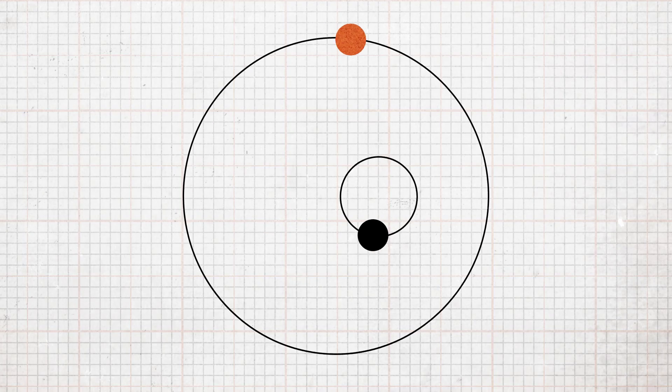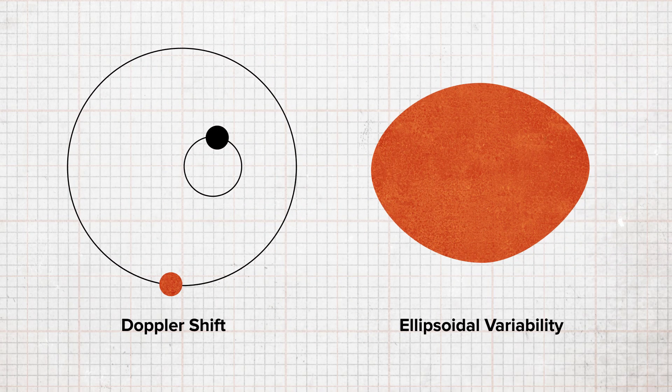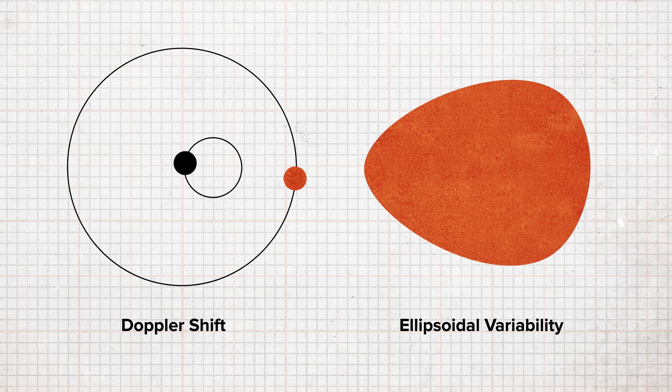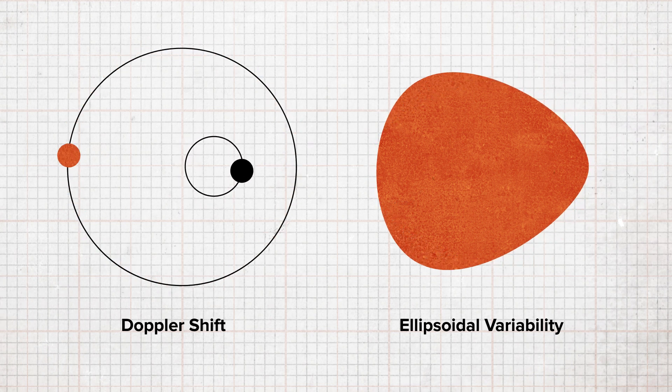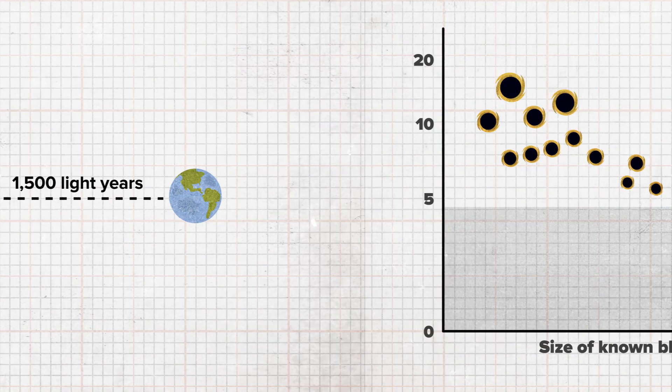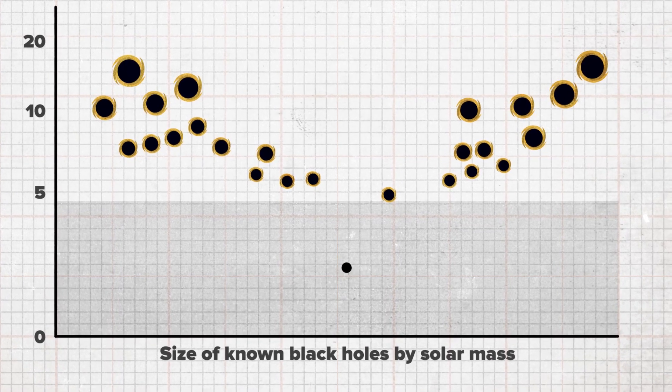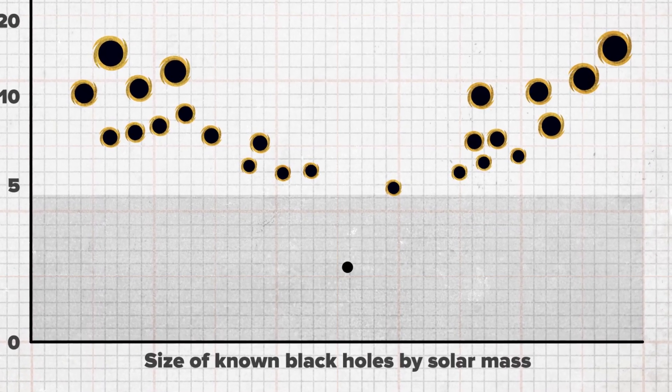By measuring the Doppler shift and ellipsoidal variability, the researchers have identified this as a black hole. What's unique is this black hole is only 1500 light years away, making it the closest one to earth. It's also among the smallest black holes to be discovered at only three times the size of our sun. Because the system is so unique and so weird, it definitely warranted the nickname of the unicorn.